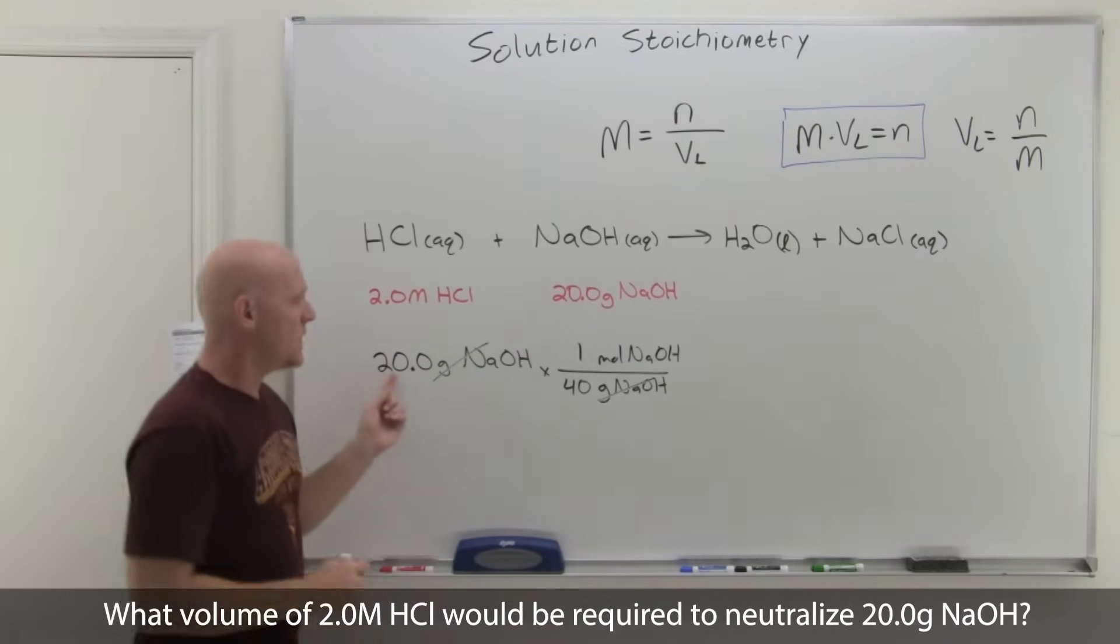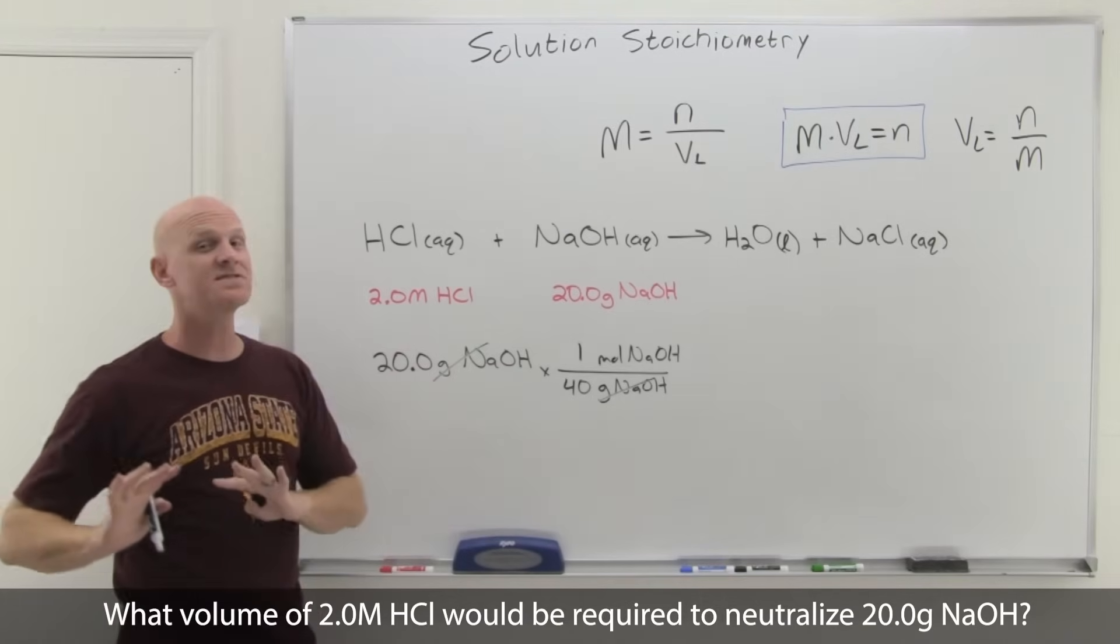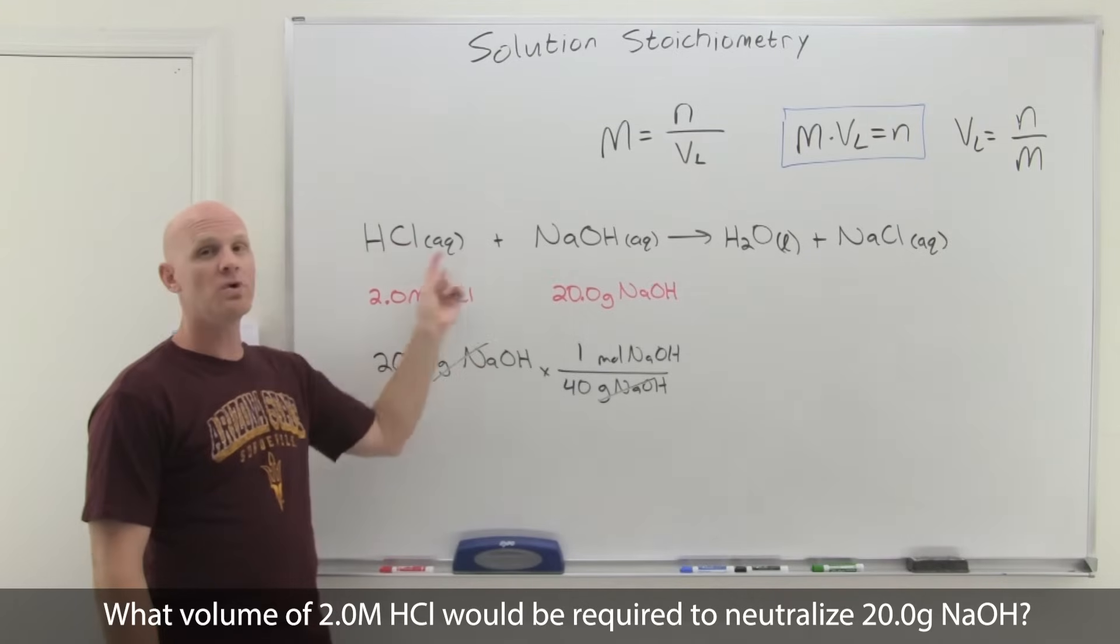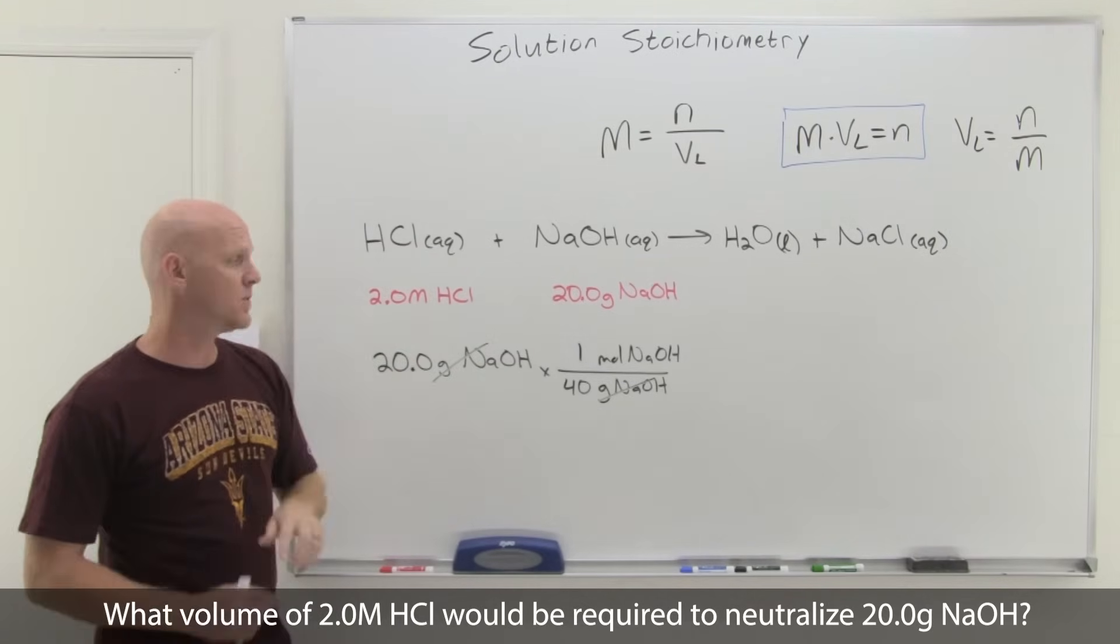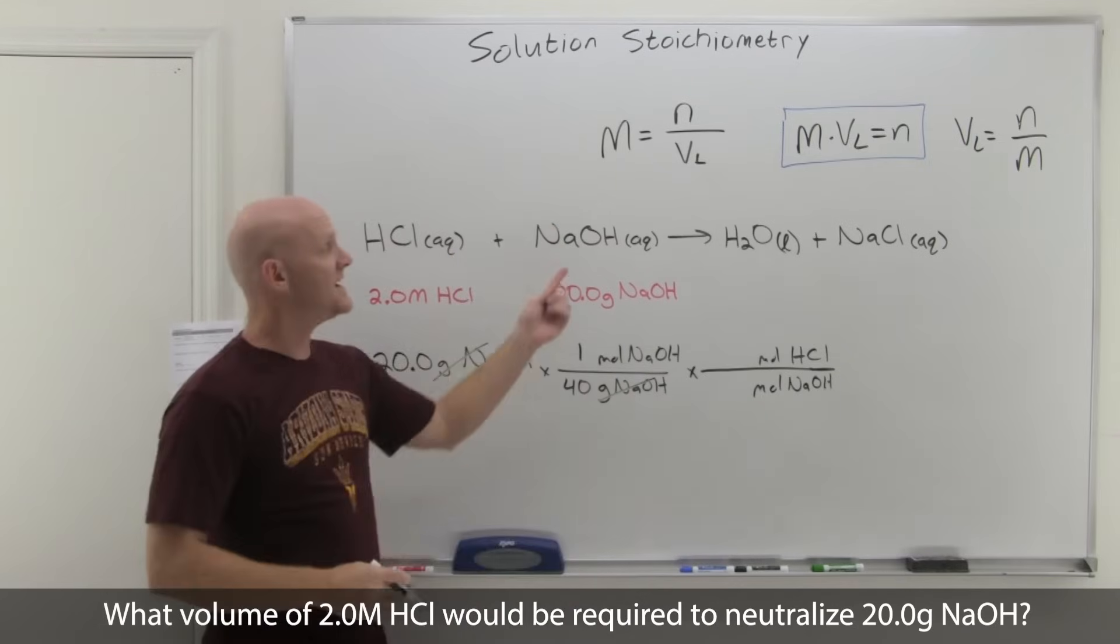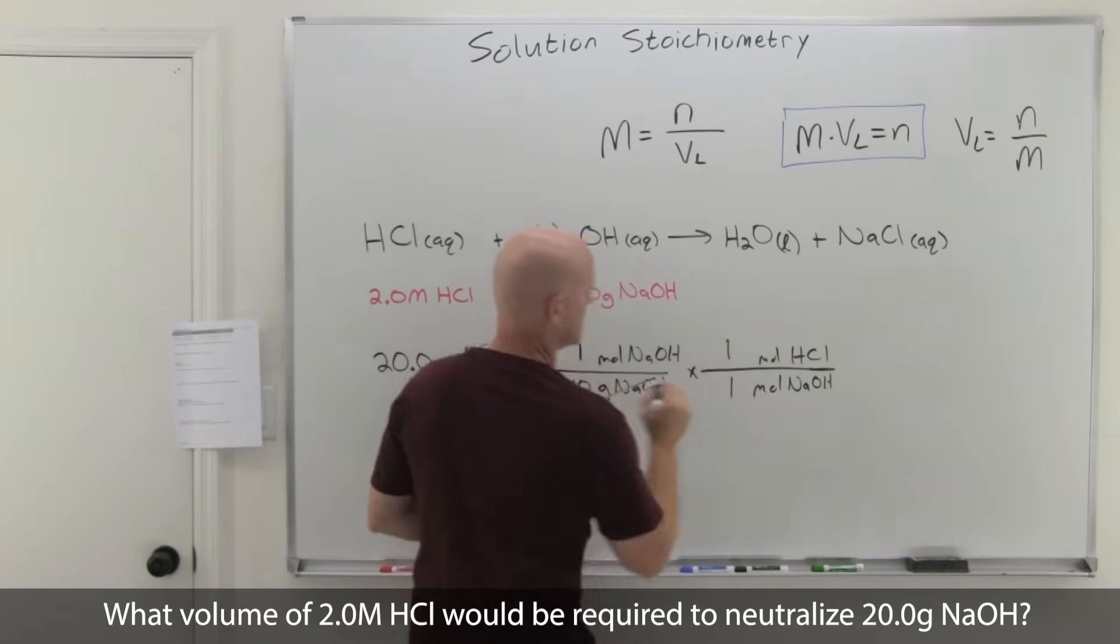From here we can see that 20 divided by 40 is half a mole, 0.5 moles. But we can take this a step further because now that we know the moles of NaOH, we can use our mole-to-mole ratio to convert that into moles of HCl. We'll put moles of NaOH in the denominator, moles of HCl in the numerator. This mole-to-mole ratio comes from the coefficients in the balanced chemical reaction, which in this case is just 1 to 1.